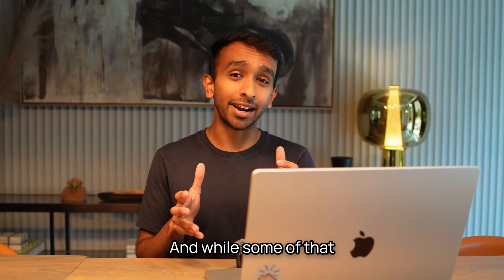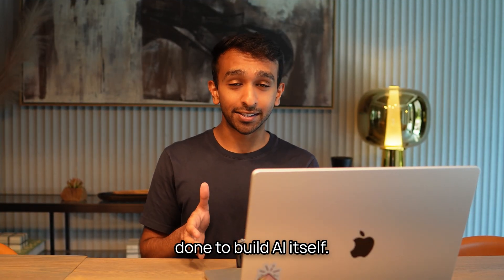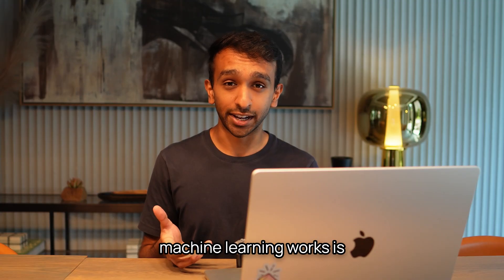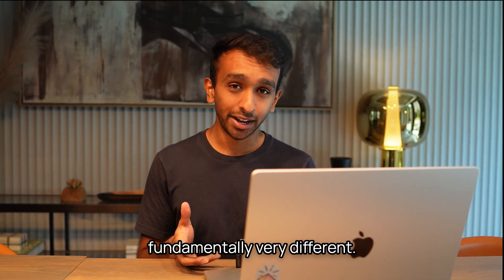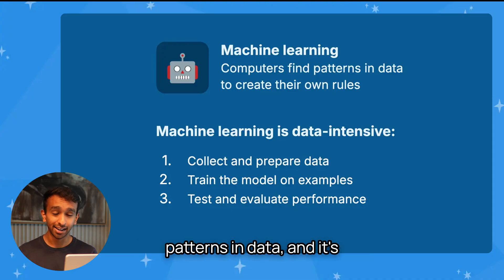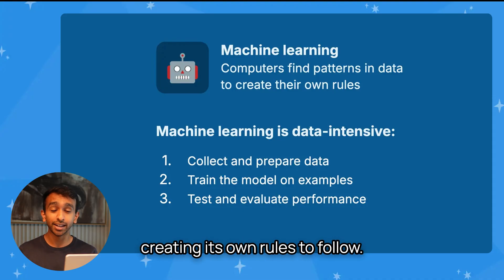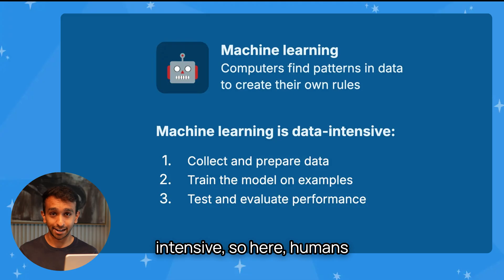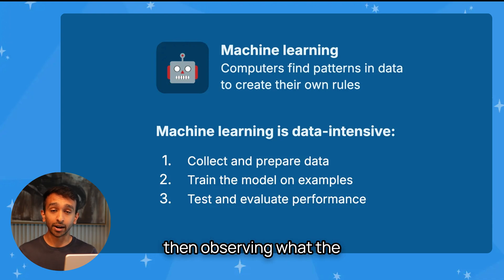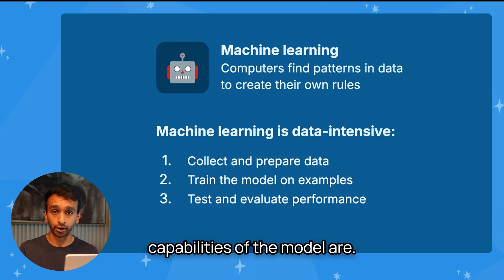While some of that engineering is being done to build AI itself, the way that AI and machine learning works is fundamentally very different. In machine learning, the computer is the one finding patterns in data and creating its own rules to follow. Machine learning is very data intensive — humans are collecting and preparing data, training the model on examples, and then observing what the capabilities of the model are.